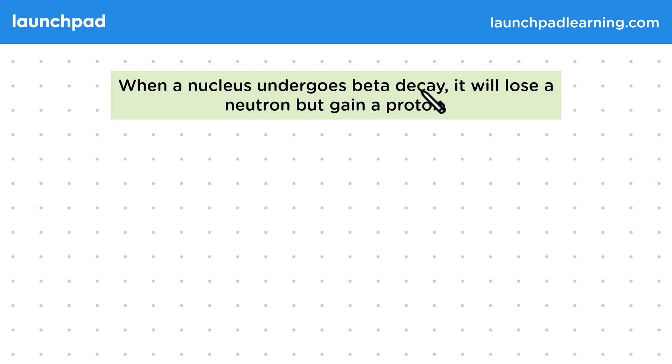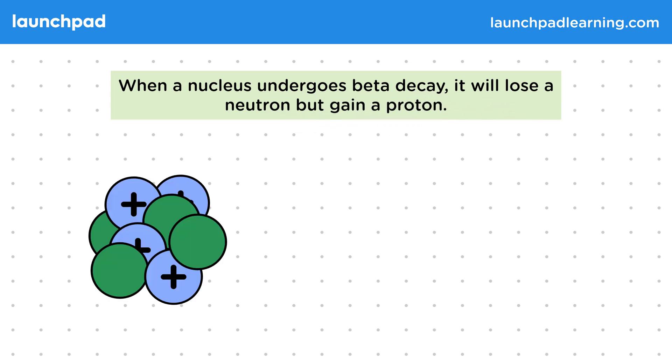When a nucleus undergoes beta decay, it will lose a neutron but gain a proton. So nuclei that undergo beta decay usually have a lot more neutrons than protons.